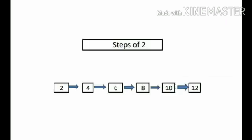Steps of 2. We count 2 numbers after the number 2, we get the number 4. On counting 2 numbers after 4, we get 6. Here, by counting 2 forward every time, we get each next number. So here, starting from 2 and counting in steps of 2, the numbers we get are 4, 6, 8, 10, and 12.